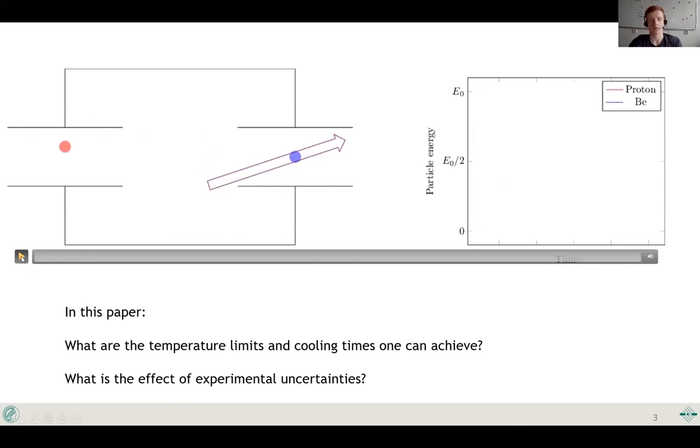If we let that system evolve, at first nothing happens to the proton energy because the beryllium ions are so cold they do not induce any image currents and do not couple to the proton anymore.